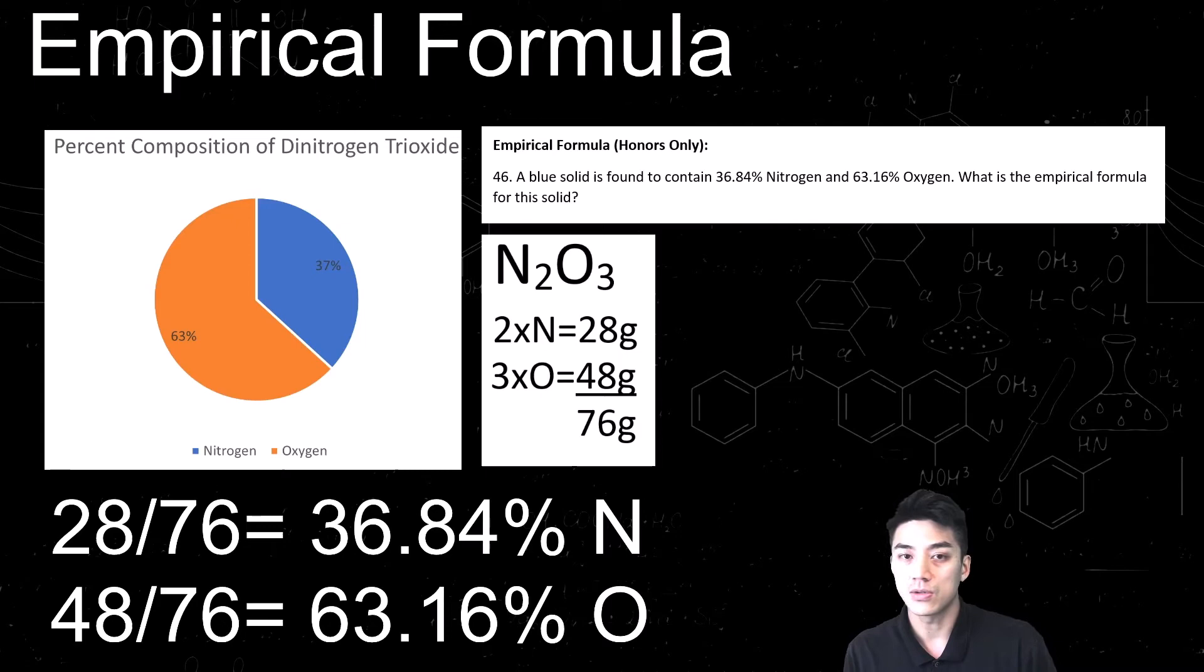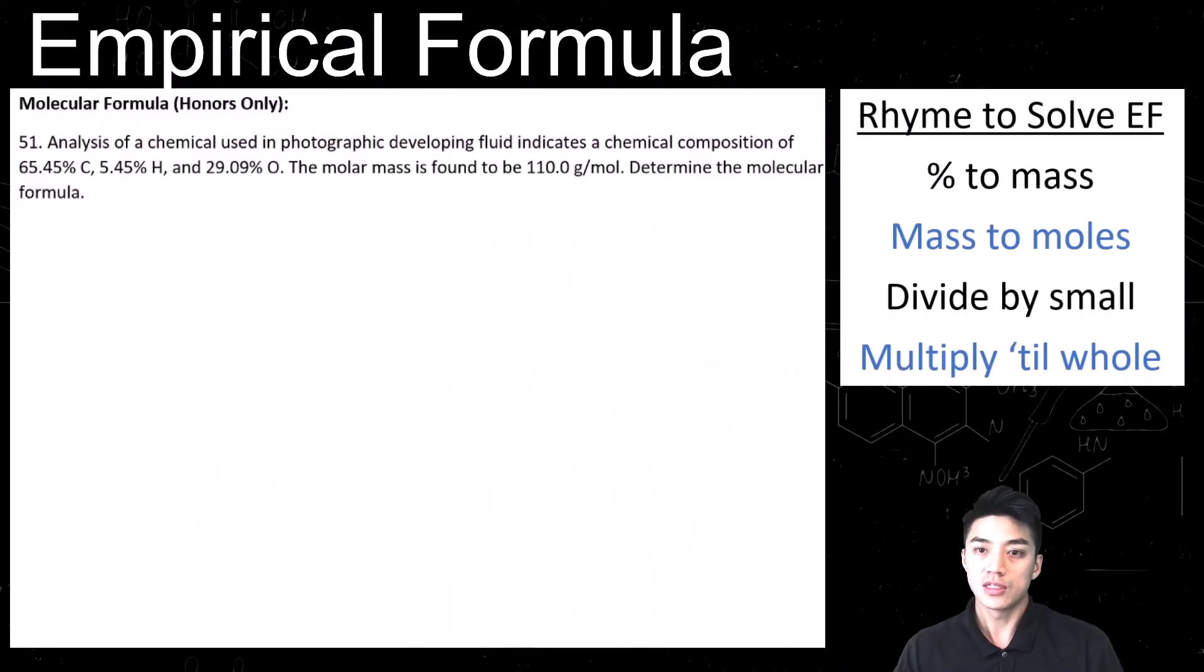This is a molecular formula problem. Number 51 reads, analysis of a chemical used in photographic developing fluid indicates a chemical composition of 65.45% carbon, 5.45% hydrogen, and 29.09% oxygen. The molar mass is found to be 110 grams per mole. Determine the molecular formula. So molecular formula, you just need to take one more step in addition to what you did for the empirical formula. So I'll explain once we get there.